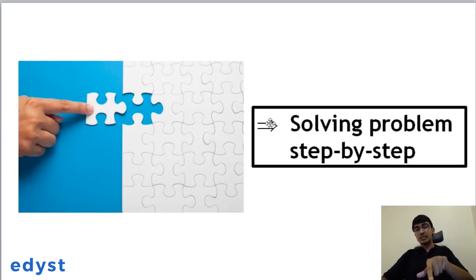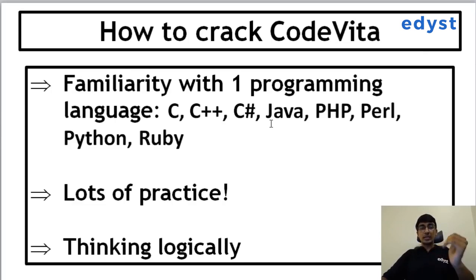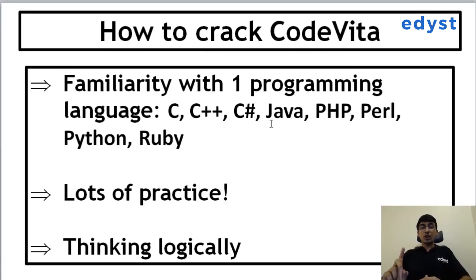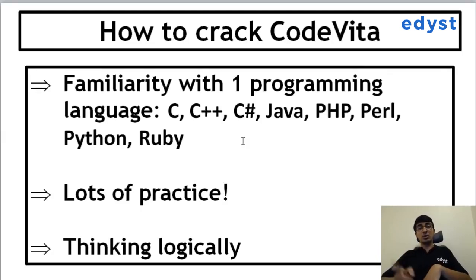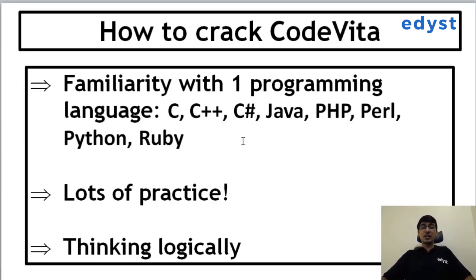Now, what are the tools you need to crack CodeVita? Number one: you need familiarity with at least one programming language. TCS CodeVita supports C, C++, C#, Java, PHP, Perl, Python, and Ruby. If you've done simple hello world programs, for loops, while loops, and simple arrays or 2D arrays in any of these languages, you're good to go. But if you're not familiar with any of these languages, please don't start practicing CodeVita yet.